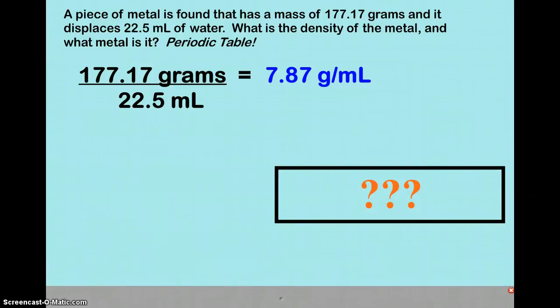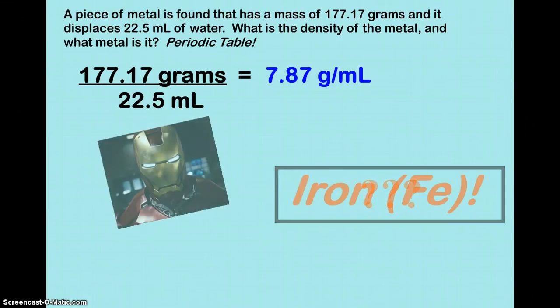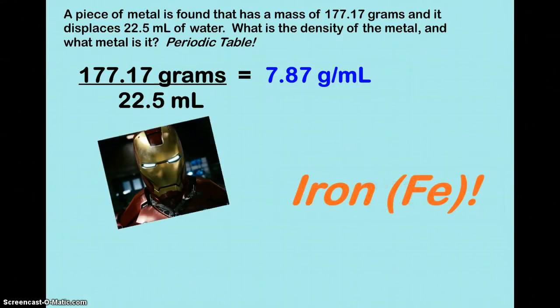And so you need to look on your periodic table, or you can look it up online. And when you do, find that the density of iron is equal to 7.87. So that is what that piece of metal is.